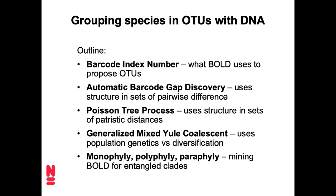Then we will look at a method that considers both processes that give rise to tree shapes when those trees are based on both multiple sequences within species and multiple species. There's a mixture of both population genetics and diversification, which we will discuss when we talk about the generalized mixed Yule coalescent methods. Finally, we will have a brief rejoinder about monophyly, polyphyly, and paraphyly, and how we might define that programmatically — and then use that to mine BOLD to see to what extent different clades are entangled in polyphyly or paraphyly when we look at their underlying sequence data.